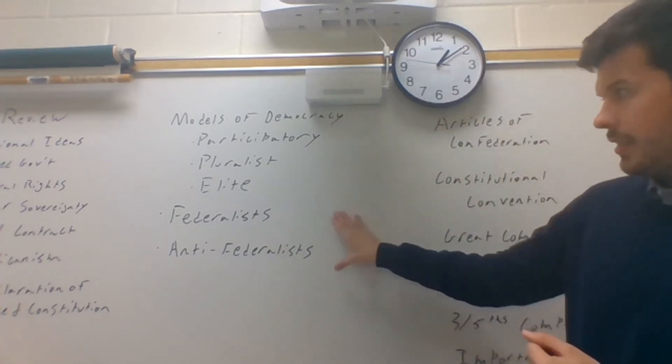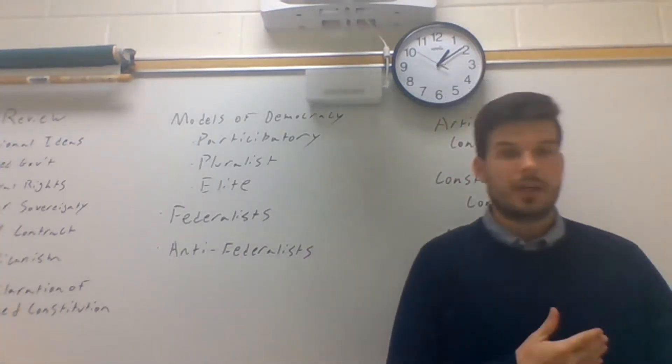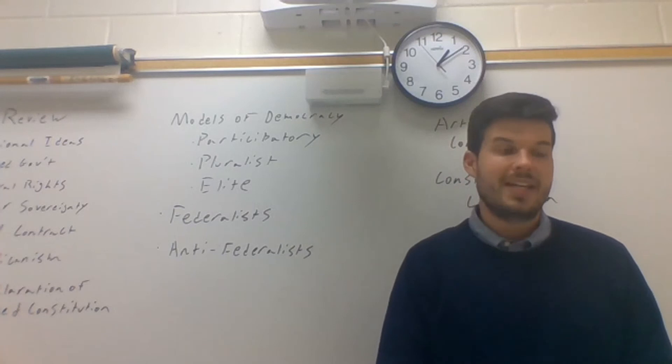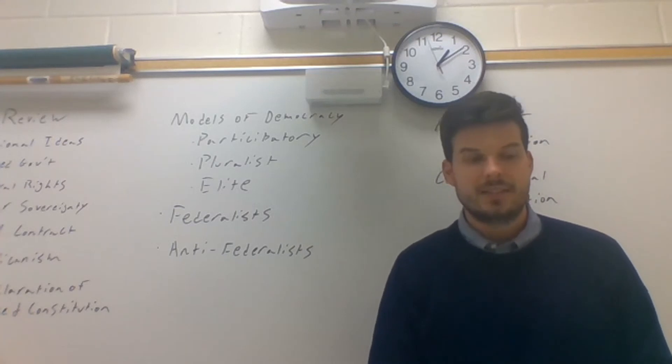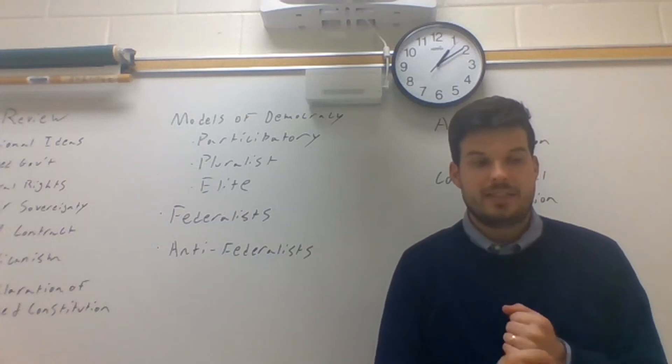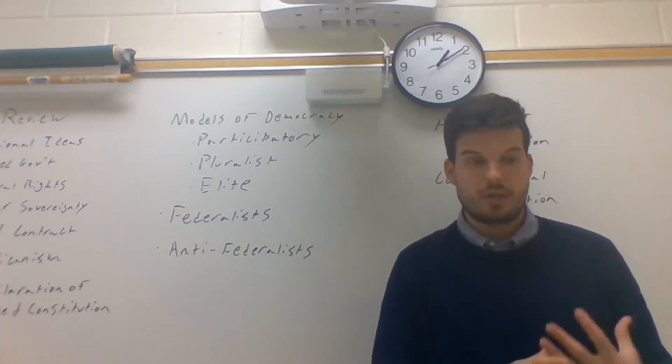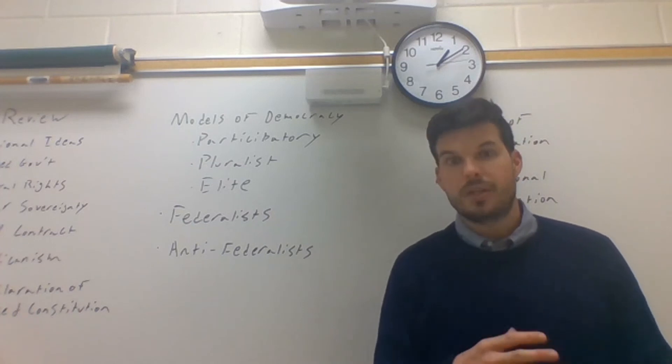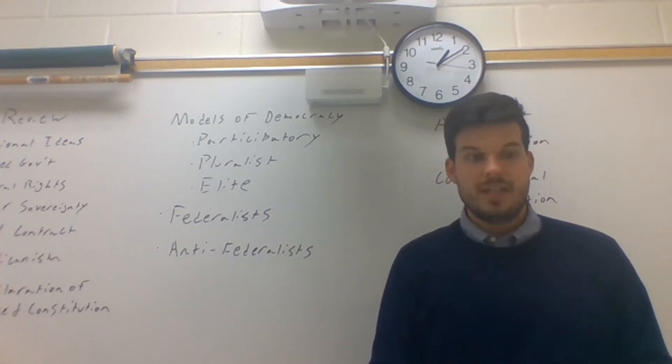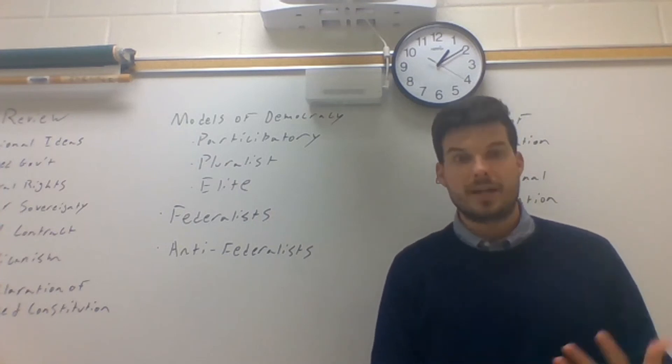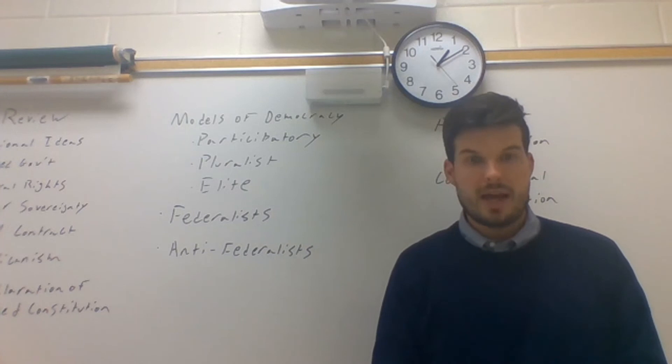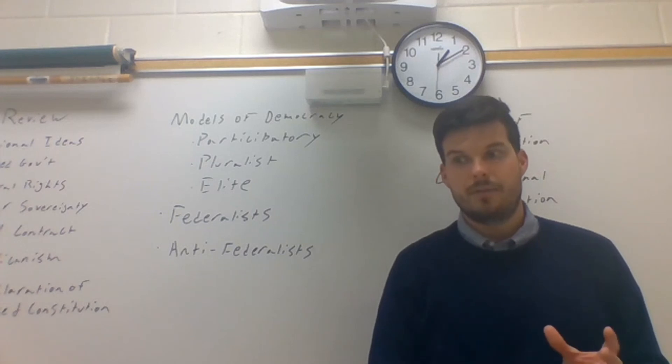Federalists are for a stronger central government. Anti-Federalists are for more state sovereignty. They basically do this for different reasons. The Federalists, again, that main argument happens in Fed 10, saying, look, if you have a pure democracy, the majority will always tyrannize the minority. If you have a republic, it can better deal with the natural divisions that people have. If you keep this strong central government and limit the impact of factions, we have a greater chance at long success.